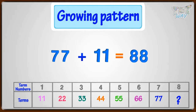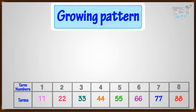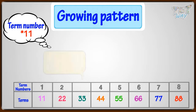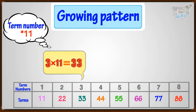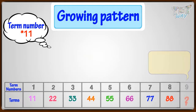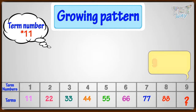So the 8th term would be 88. There is another way too. We can see that every term is the term number multiplied by 11. Like term number 1 is 1 multiplied by 11, that is 11. Term number 3 is 3 multiplied by 11, that is 33. Term 4 is 4 multiplied by 11, that is 44. So if we have to find out the 9th term, we can say it will be 9 multiplied by 11, which is equal to 99.